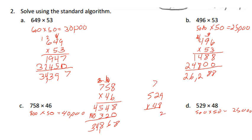And then doing the standard algorithm: 529 times 48. We're gonna do our 48 first. 8 times 9 is 72, carry 7. 8 times 2 is 16 and 7 is 23. 8 times 5 is 40 and 2 would be 42.